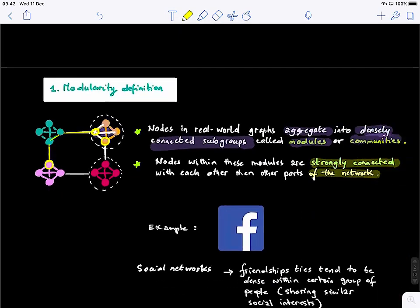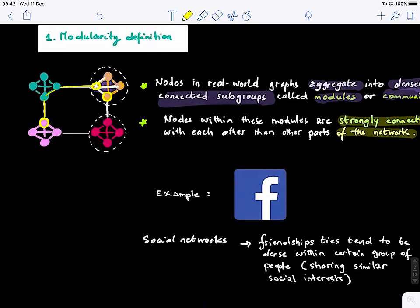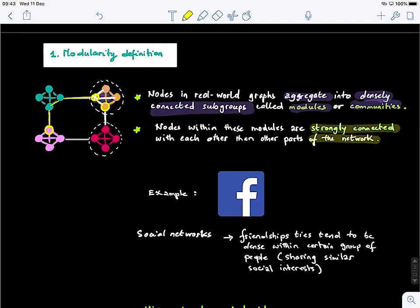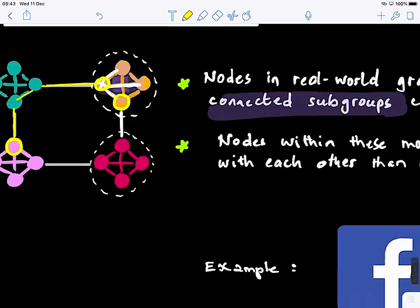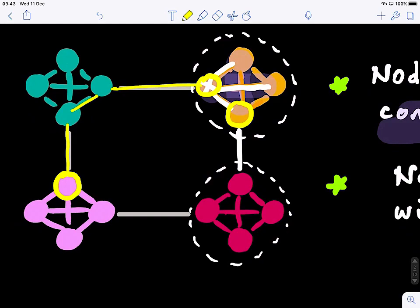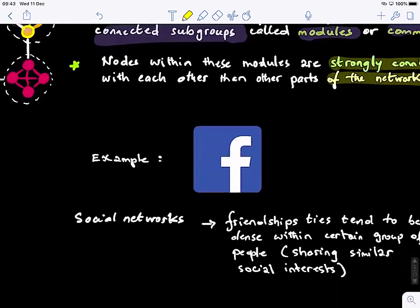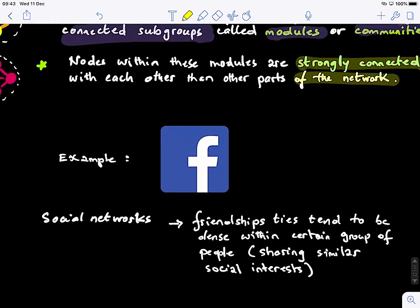So where do we find modularity? It's almost everywhere - different biological systems, even our brains. There are structured connectivities in our brains; functional connectivity follows this modularity structure. In Facebook, for example, if you look at social networks, you can see that friendships tend to be dense within certain groups of people - for example, people sharing the same social interests, and you can categorize or cluster them very differently. This is one example.